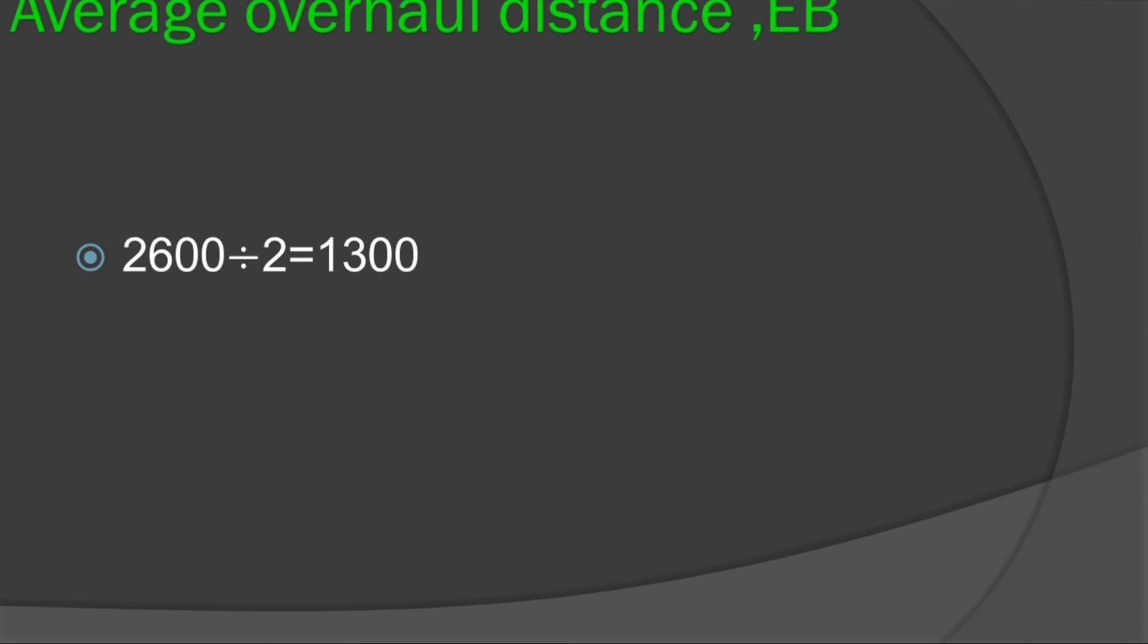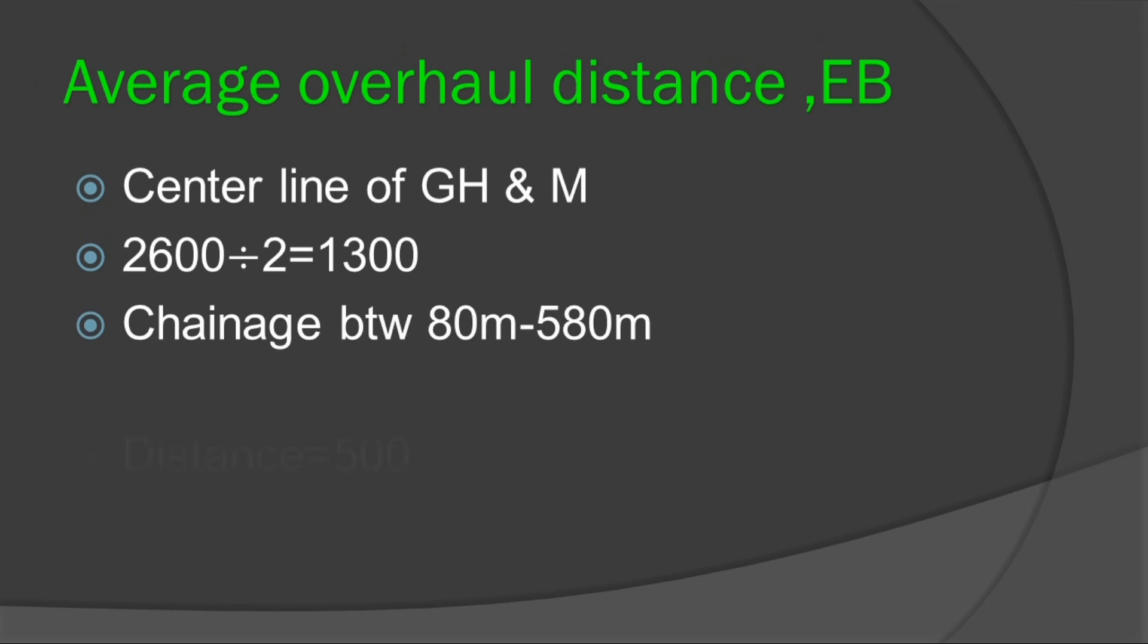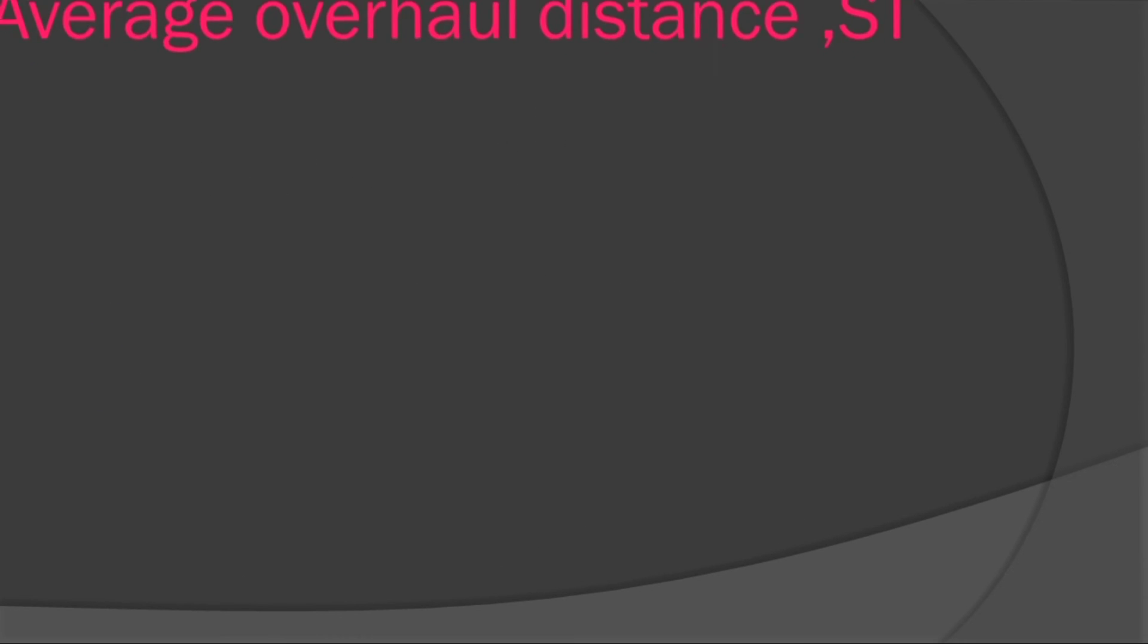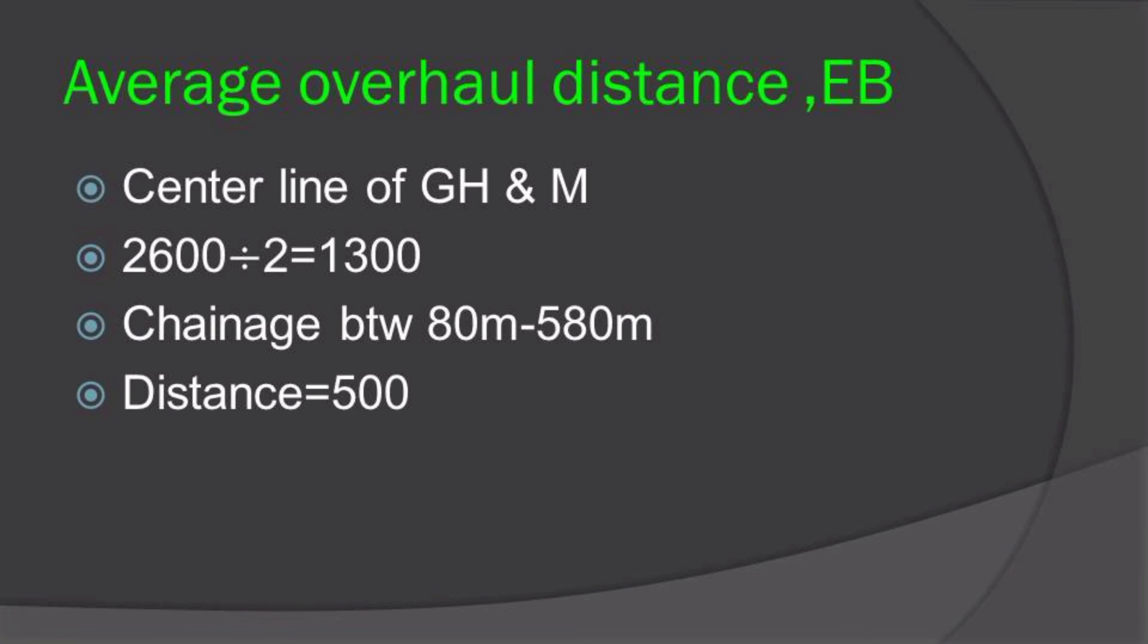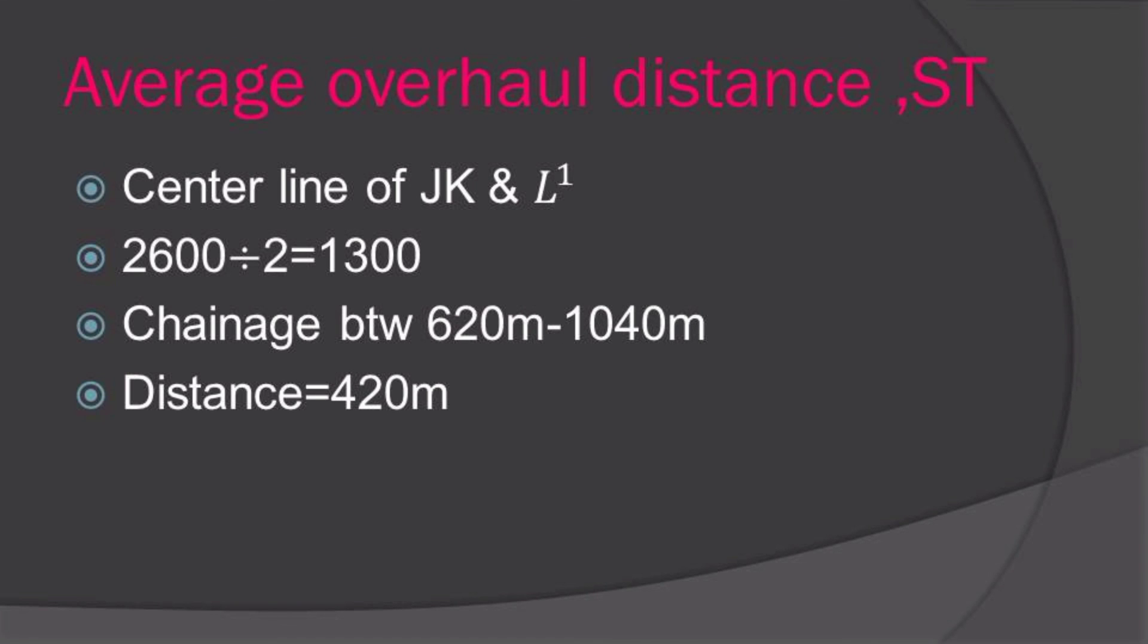Lastly we observe the average overhaul distance obtained from the center line of GH and M. At GH the cumulative volume of 2600 is divided by 2. We obtain 1300 meters cubed which on the curve cuts two points, after which the chainages of the two points are obtained and the distance between them calculated. Likewise we do the same to the other curve. So here we are doing for the fill and for the cut.